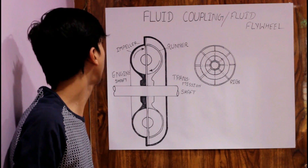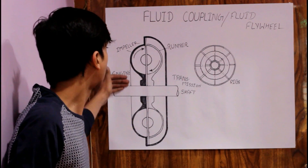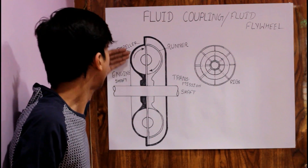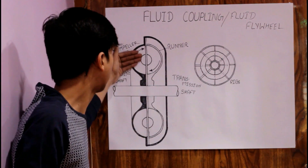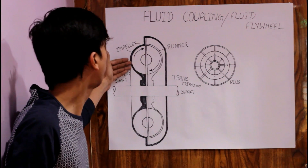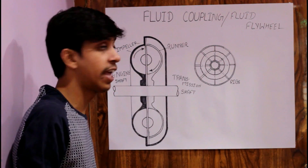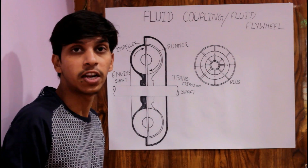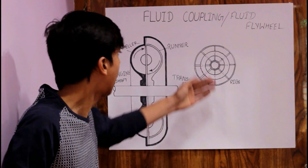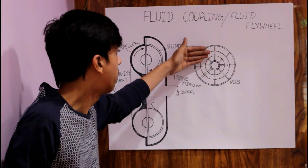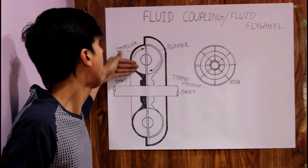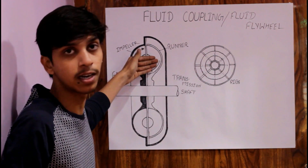When the engine starts spinning, the impeller also starts spinning, because this portion containing the impeller is full of oil. In the impeller, radial plates are present — ribs which are present in the impeller as well as in the runner.